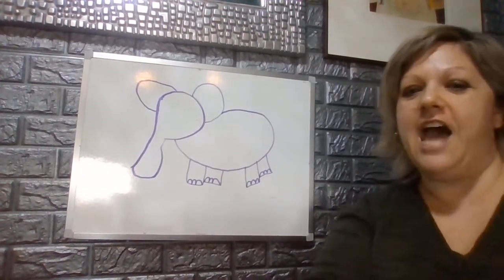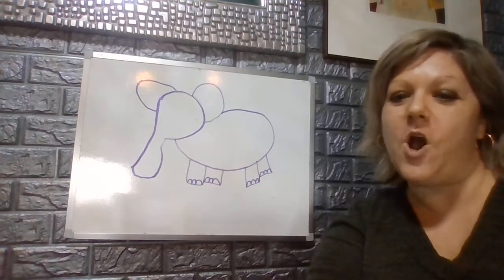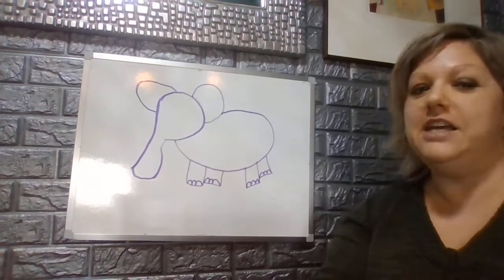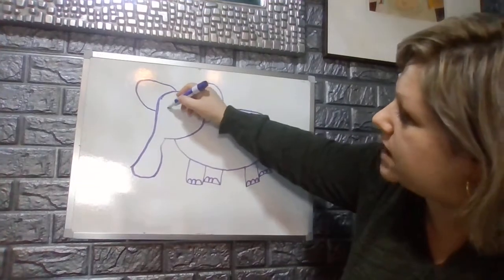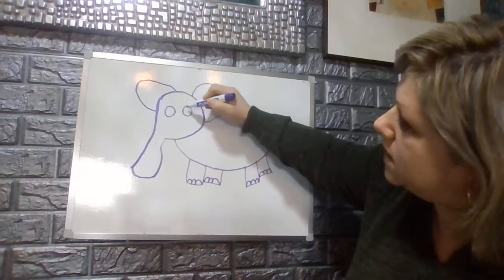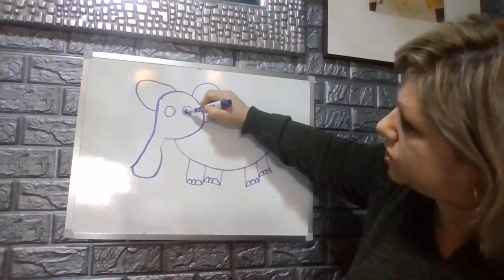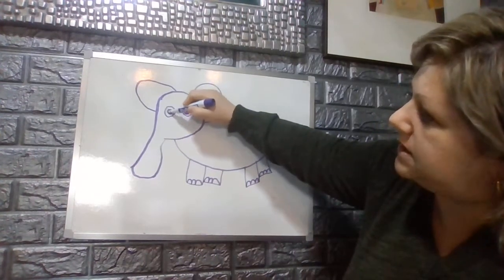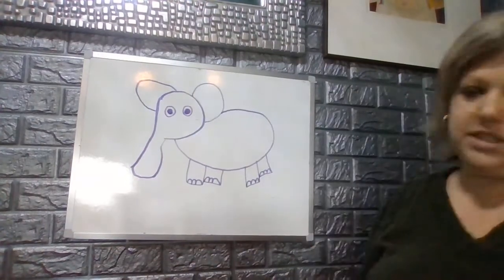And then we are going to add his face. I want you to make two circles for his eyes and then put two smaller circles and shade them inside just like that.